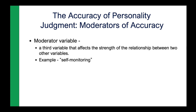Self-monitoring is a trait; it's normally distributed. Some people are very high self-monitors — they change their behavior almost like a chameleon to fit the situation. Whereas people who score lower in self-monitoring don't change their behavior depending on the situation. Those people who are lower in self-monitoring are easier to judge because they're just going to be who they are across all situations. The ones that are high self-monitors are more difficult to judge and more difficult to predict how they're going to behave.